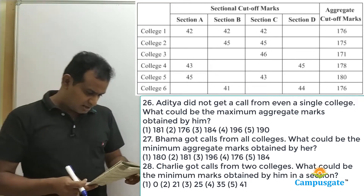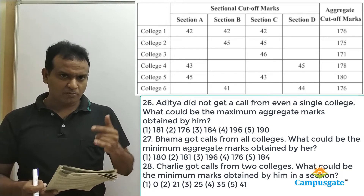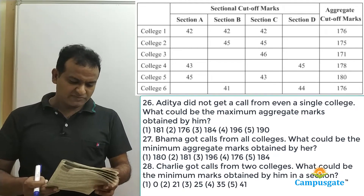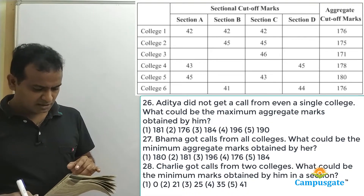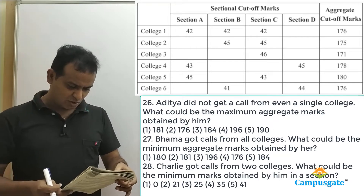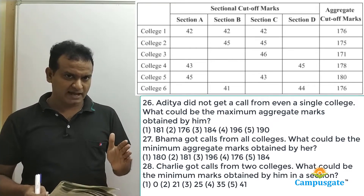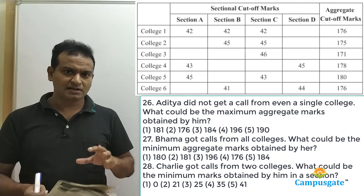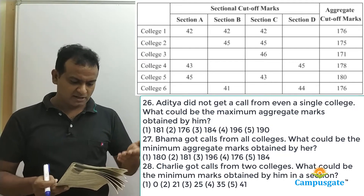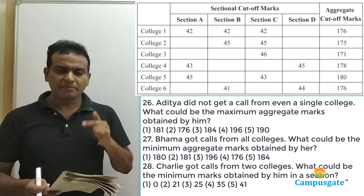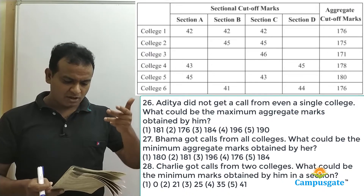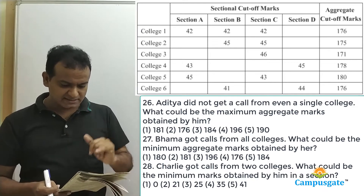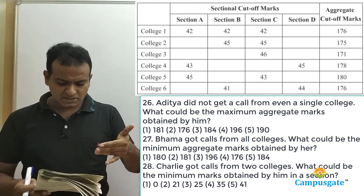For example, in section A, college one specified 42 marks as a cutoff, college four specified 43, and college five specified 45. If a person got 41 marks in section A, he won't get any call from colleges one, four, and five because 41 is lower than their sectional cutoffs. Similarly, in section B, if a person gets 40 marks, he won't get calls from colleges one, two, and six. In section C, if a person gets 41 marks, he won't get calls from colleges one, two, three, and five. In section D, if a person gets 43 marks, he won't get calls from colleges four and six.